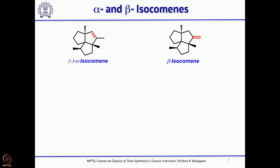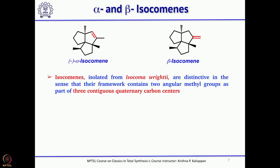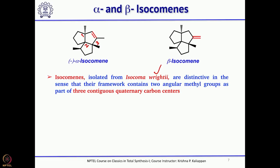We will talk about the total synthesis of alpha and beta isocomanes today. These isocomanes were isolated from Isocoma wrightii. A closer look at these molecules reveals that there are 3 contiguous quaternary centers. Construction of quaternary carbons is not easy, and particularly if you have to construct them stereoselectively, it is really a tough job. In addition, there is also one chiral center.